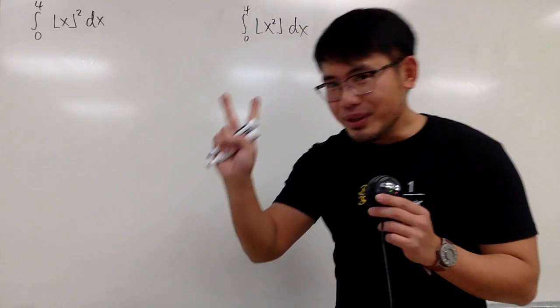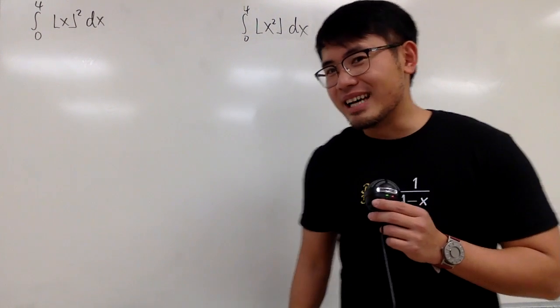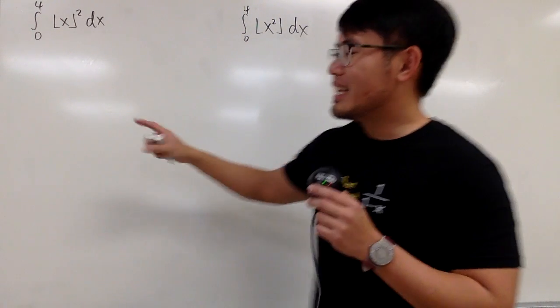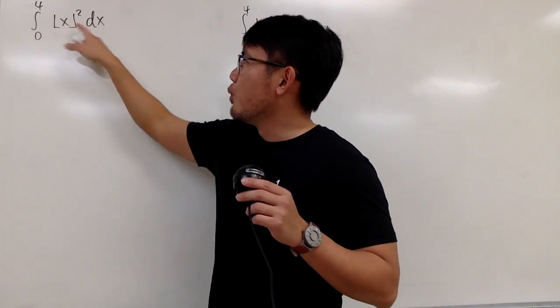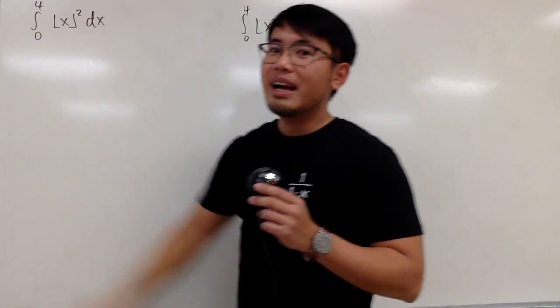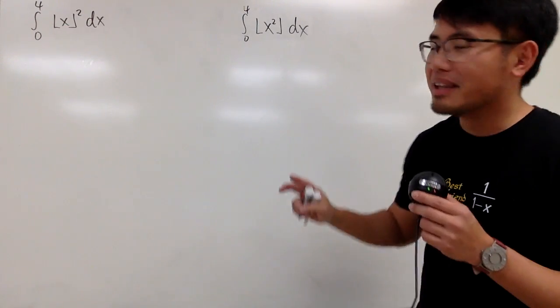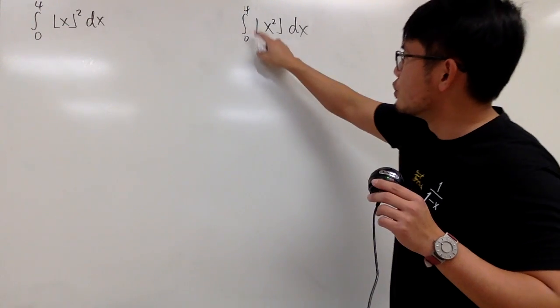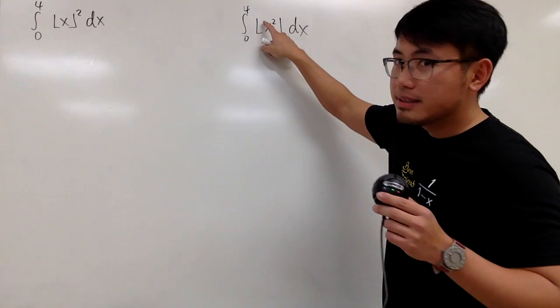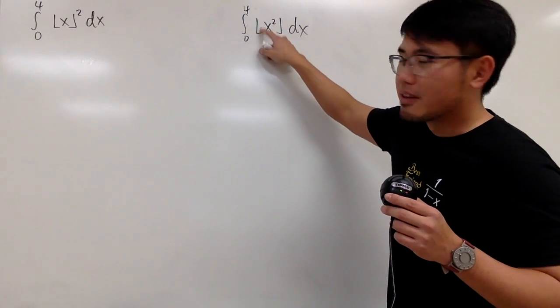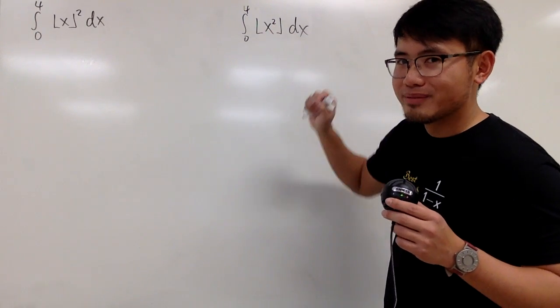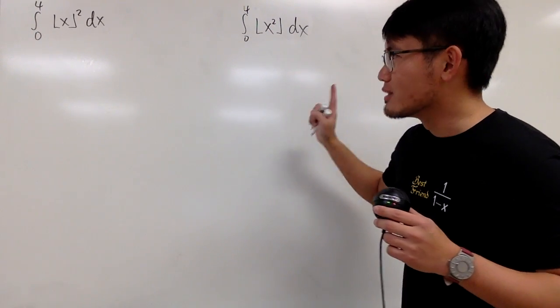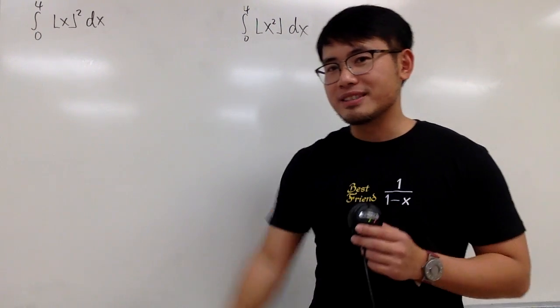Okay, two integrals on the spot as always. Here we have the integral from 0 to 4 of the floor of x, and then squared. And then the second one is the integral from 0 to 4, this time we have the floor of x squared. Of course, they are different.